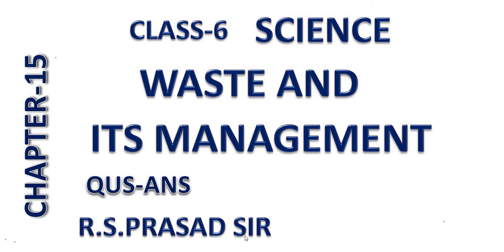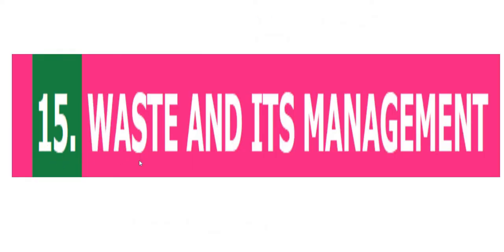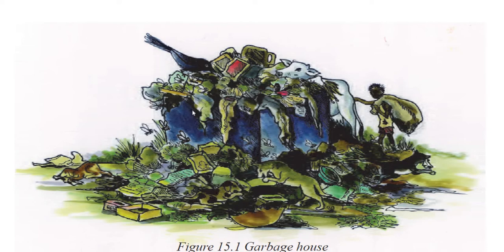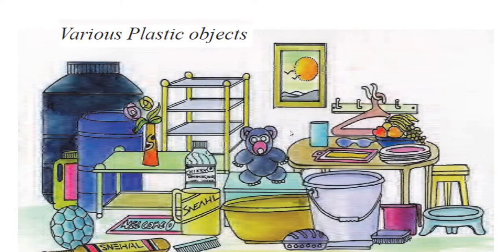Class 6 Science. I am RS, your teacher. Today, Chapter 15: Waste and Its Management. Let us see what is in this chapter. You can see here so many wastes spread around. Birds are eating, some cows are sitting, boys are searching something — many animals are here. Some plastic things are here, which can be useful through waste management. Various plastic objects are here which are non-degradable.